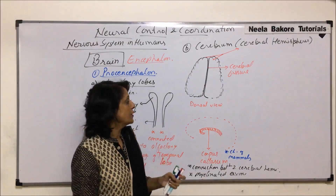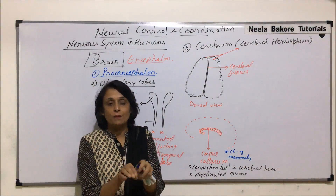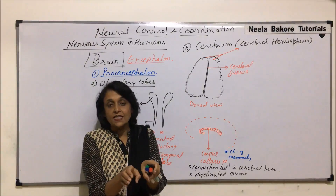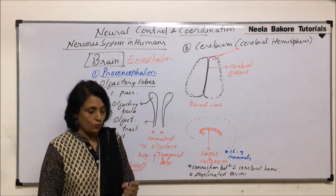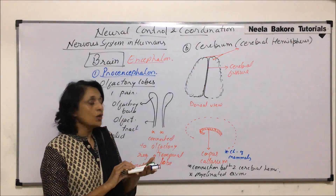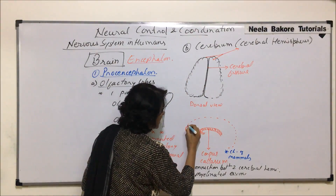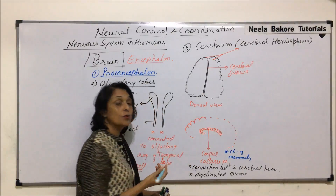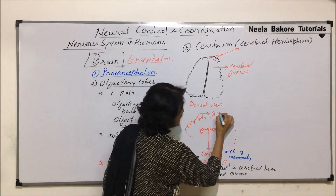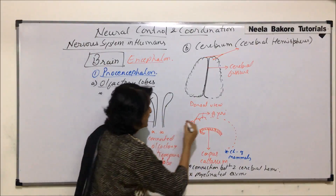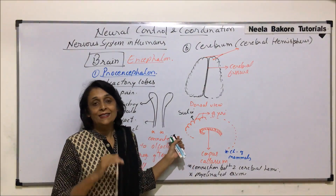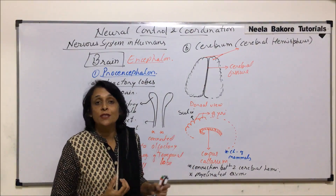These two hemispheres are connected by the C-shaped corpus callosum. The outer surface of the cerebrum is not smooth — it is thrown into folds. From outside we find ridges and furrows, which increase the surface area. These ridges are known as gyri and the depressions are known as sulci. Gyri and sulci on the surface increase the surface area to accommodate more and more neurons.